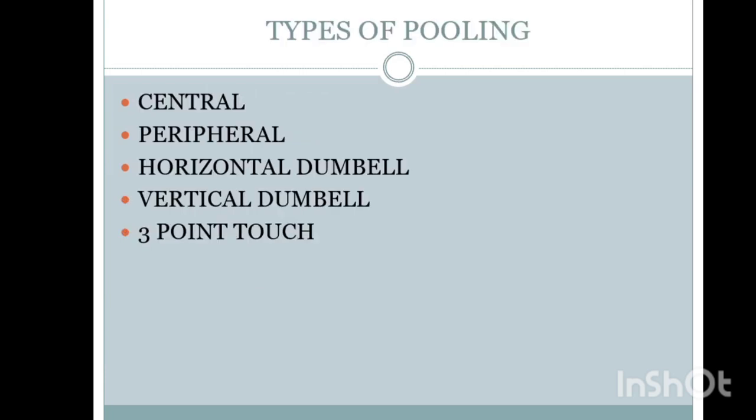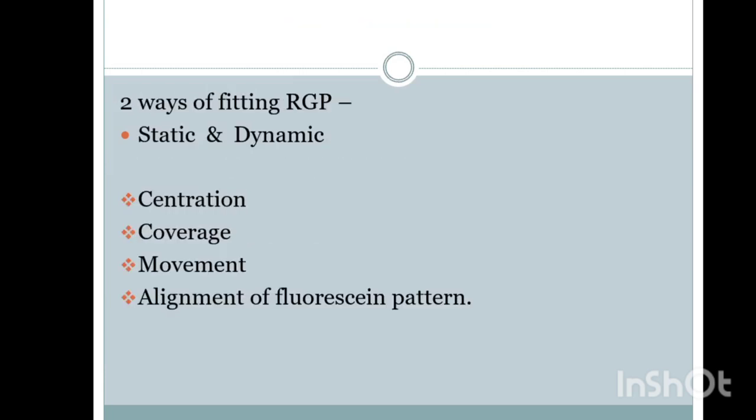For dynamic fitting, tell the patient to blink and move the eyes to the right side, blink — while the patient is moving the eyes, check whether the RGP lens is also moving along with the cornea. Check for any low riding or high riding lens, and check for any lens lag. Check all these things in dynamic fitting.